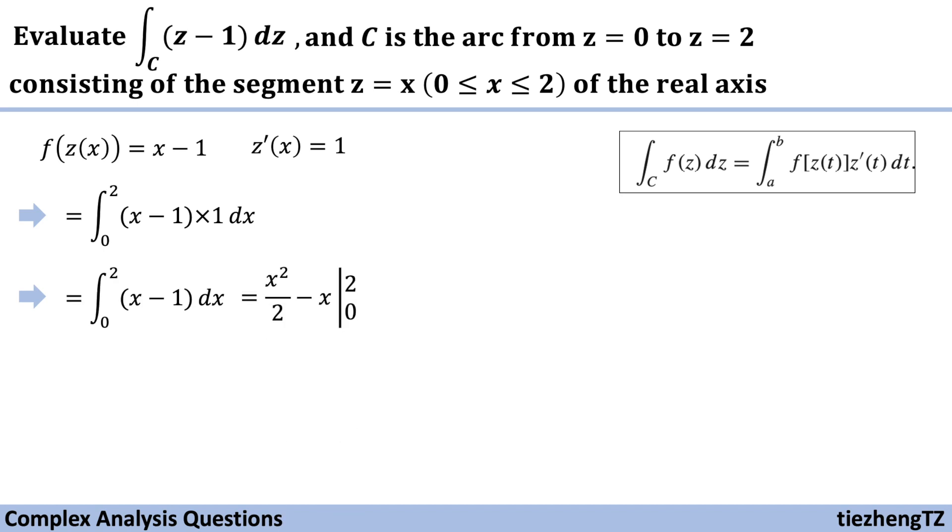And we need to find the antiderivative, which is half x square minus x from 0 to 2.